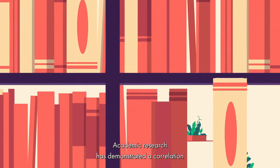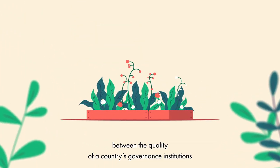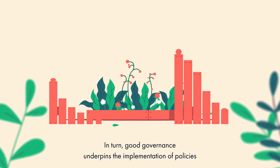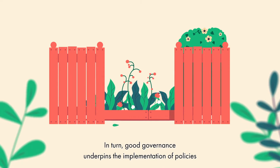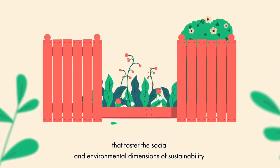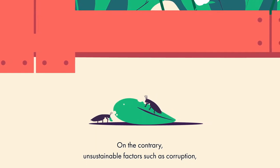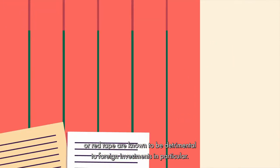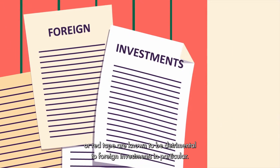Academic research has demonstrated a correlation between the quality of a country's governance institutions and its debt default risk. Good governance underpins the implementation of policies that foster the social and environmental dimensions of sustainability. On the contrary, unsustainable factors such as corruption, lack of freedom, or red tape are known to be detrimental to foreign investments in particular.